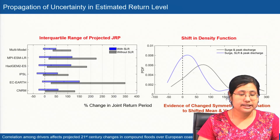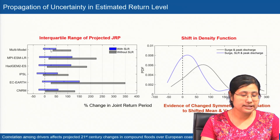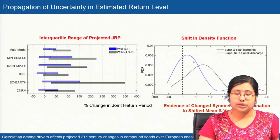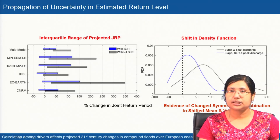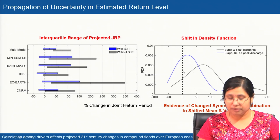For the propagation of uncertainty in return levels, individual models and their multi-model ensemble are compared. The multi-model ensemble narrows down the projection uncertainty; however, individual climate models show sharp increases, with EC-EARTH showing the largest uncertainty. Comparing the shift in the density function, when only considering the effect of surge and peak discharge, there is a shift in return period indicating a decrease in hazard; but when considering sea level rise, there is an increase in hazard — meaning the hazard becomes more frequent.